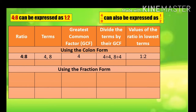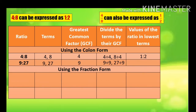So 4 is to 8 became 1 is to 2 by dividing the terms by their GCF. Let's have another example: 9 is to 27. What are the terms? 9 and 27. What is the GCF? 9. We are going to divide the terms by their GCF: 9 divided by 9 and 27 divided by 9. When we divide 9 by 9, the answer is 1, and when we divide 27 by 9, the answer is 3. So the answer is 1 is to 3.